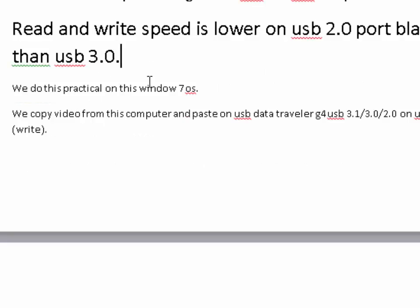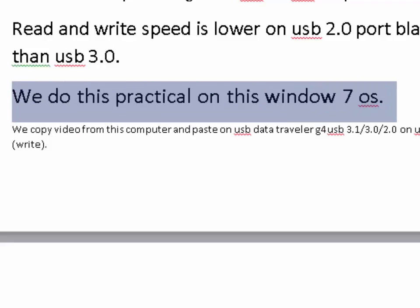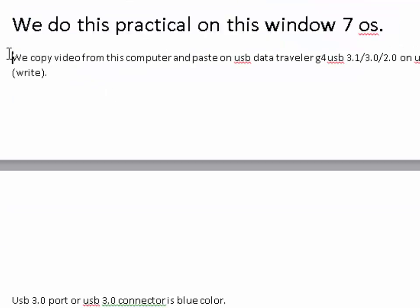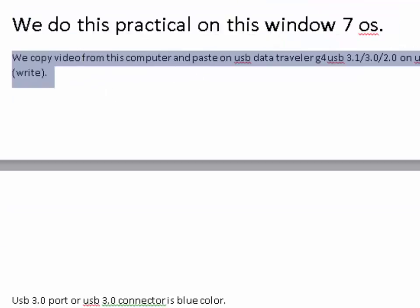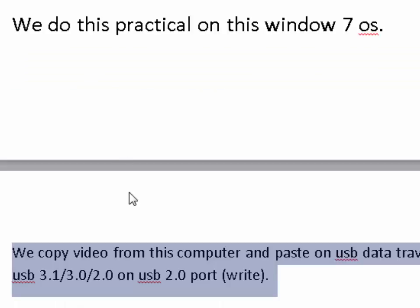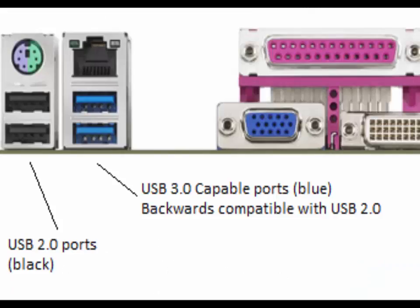We do this practical test on Windows 7 OS. We copy video from this computer and paste it onto the Kingston DataTraveler G4 USB drive on a USB 2.0 port. USB 3.0 port or connector is blue color; USB 2.0 port or connector is black color.